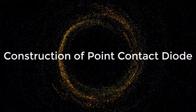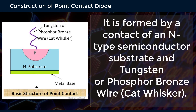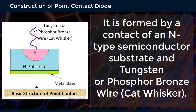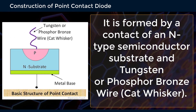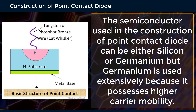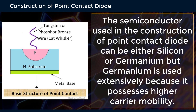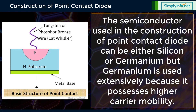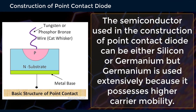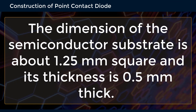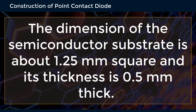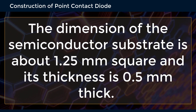Construction of Point Contact Diode. It is formed by a contact of an n-type semiconductor substrate and tungsten or phosphor bronze wire, known as the catwhisker. The semiconductor used in the construction can be either silicon or germanium, but germanium is used extensively because it possesses higher carrier mobility.